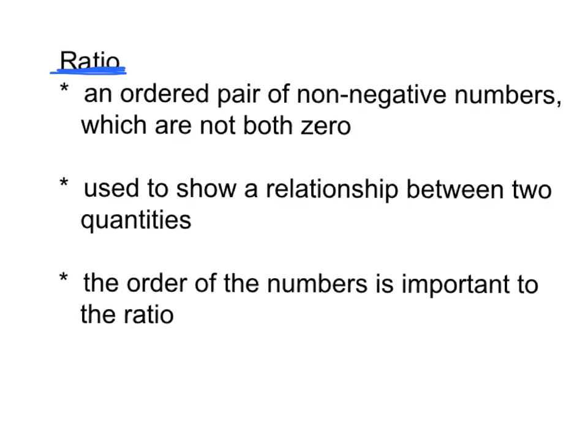So first, what is a ratio? A ratio is an ordered pair. An ordered pair means there's a particular order and there are two numbers. So there are two numbers involved in a ratio. That's what makes it a pair: two non-negative numbers which are not both zero. That means one of the numbers could be zero or the other number could be zero, but not both.